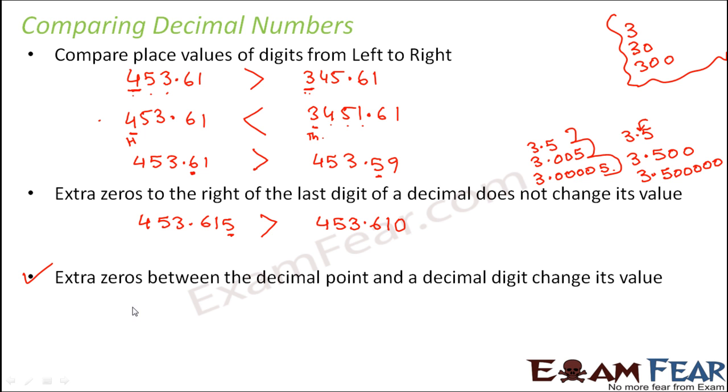So let us look at some examples considering this scenario: 453.0615 and 453.61. Which one is greater? Now if you look at the number of digits, this has more number of digits, seven digits. Here you have just five digits. So does that mean this will be greater? Definitely not.